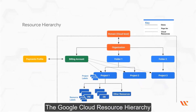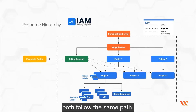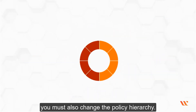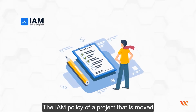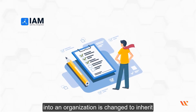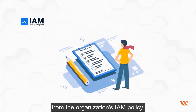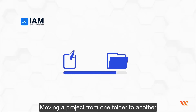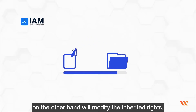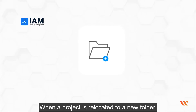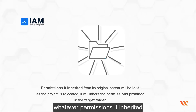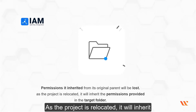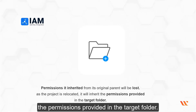The Google Cloud resource hierarchy and the IAM policy hierarchy both follow the same path. When you update the resource hierarchy, you must also change the policy hierarchy. The IAM policy of a project that is moved into an organization is changed to inherit from the organization's IAM policy. Moving a project from one folder to another will modify the inherited rights. When a project is relocated to a new folder, whatever permissions it inherited from its original parent will be lost, and it will inherit the permissions provided in the target folder.